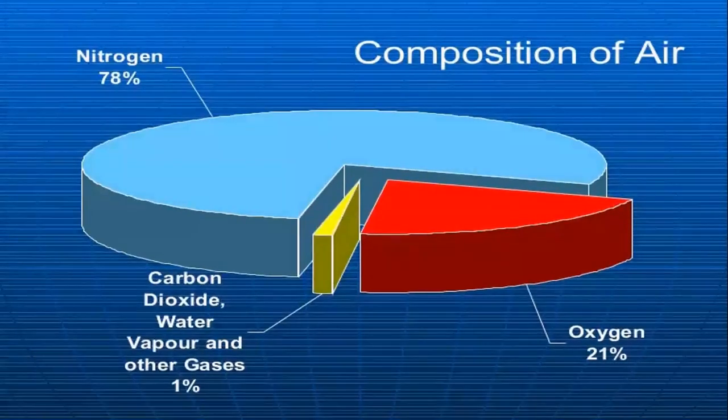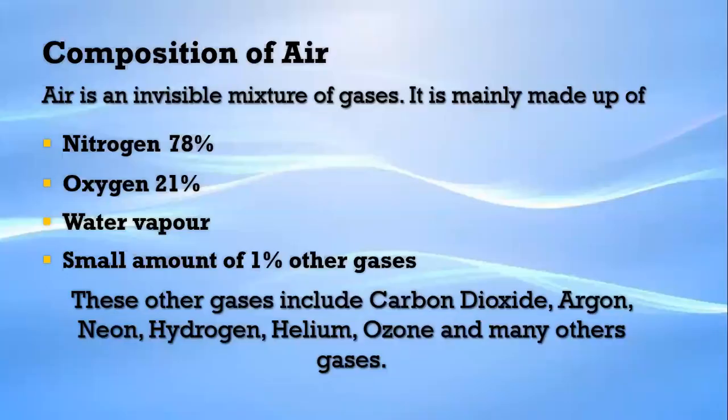So what is the composition of air? Air is an invisible mixture of gases. It is mainly made up of nitrogen, nearly 78%, and oxygen 21%. It also contains water vapor and a small amount — 1% — of other gases. These other gases include carbon dioxide, argon, neon, hydrogen, helium, ozone, and many other gases.